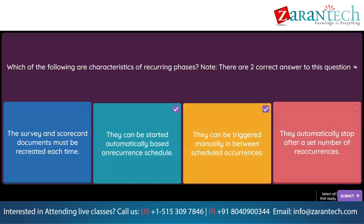Question. Which CSV file encoding types are supported to import supplier data? Note, there are three correct answers. Option 1: UTF-8. Option 2: ISO 8859-1. Option 3: UTF-32. Option 4: SCI. Option 5: US-ASCII.